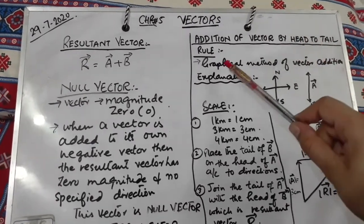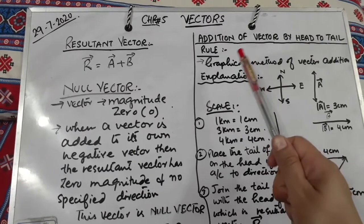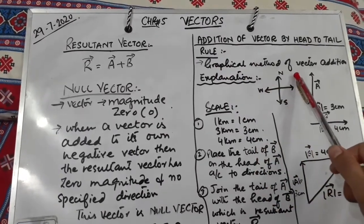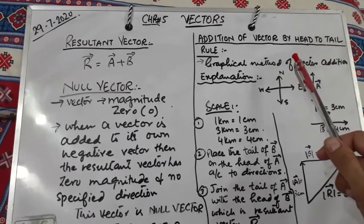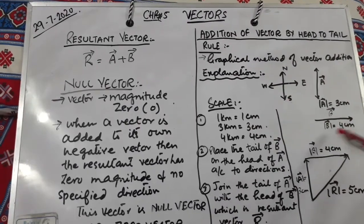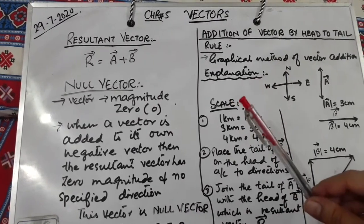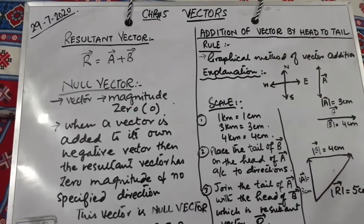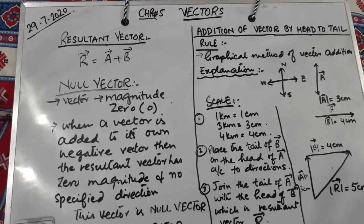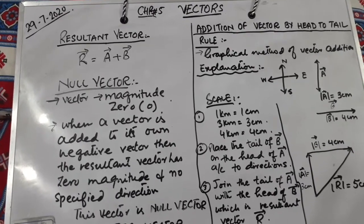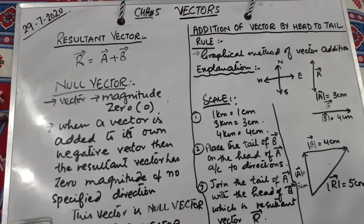The head to tail rule is a graphical method of vector addition. In this method, two or more vectors can be added by drawing vector lines in such a way that the head of the first vector coincides with the tail of the other vector. The vector line obtained by joining the tail of the first to the head of the last represents the resultant vector.